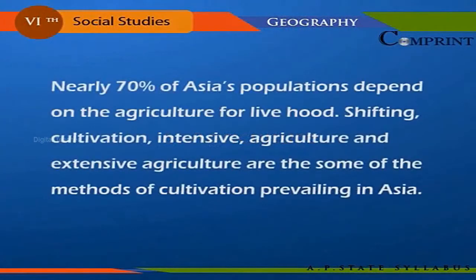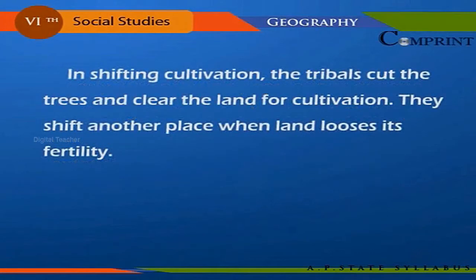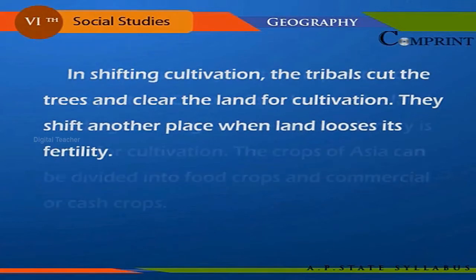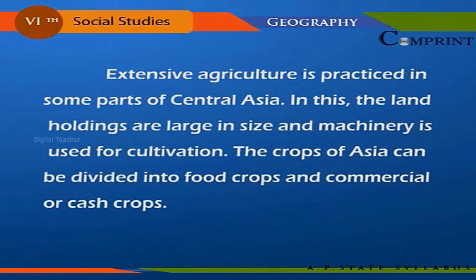Nearly 70 percent of Asia's population depends on agriculture for livelihood. Shifting cultivation, intensive agriculture, and extensive agriculture are some of the methods of cultivation. In shifting cultivation, tribals cut trees and clear the land for cultivation, then shift to another place when the land loses its fertility. Extensive agriculture is practiced in some parts of central Asia, where land holdings are large and machinery is used.